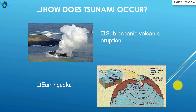How does a tsunami occur? There are basically two main reasons for a tsunami occurring. The first one is sub-oceanic volcanic eruption. You can see in this image that in the ocean a volcanic eruption can occur, and from that a tsunami can also be triggered. The second reason is earthquake — when an earthquake occurs, a tsunami can be the after-effect.